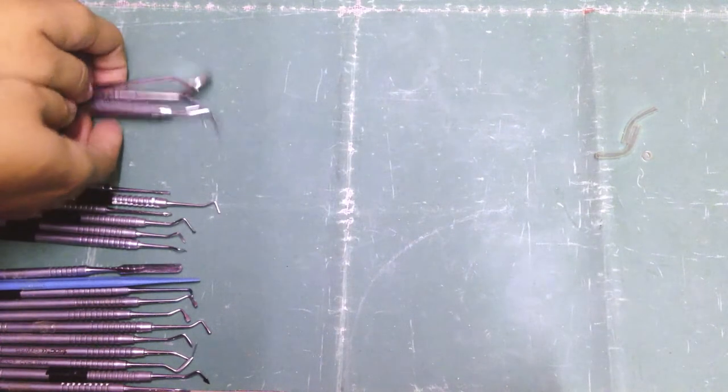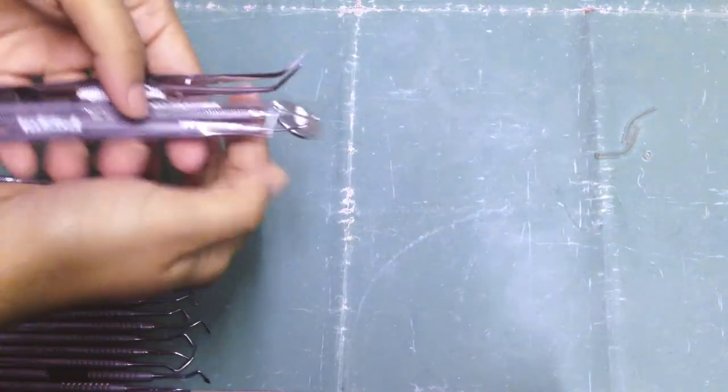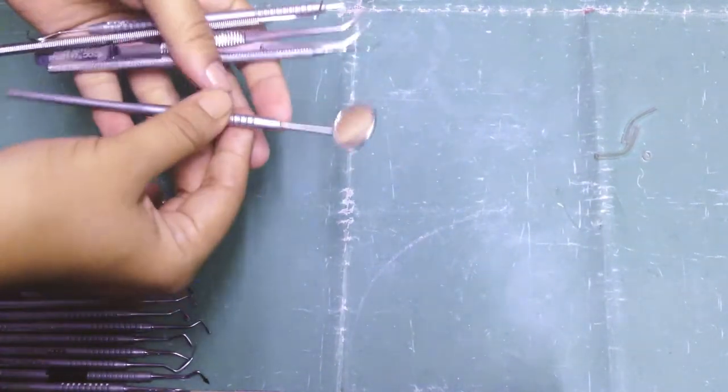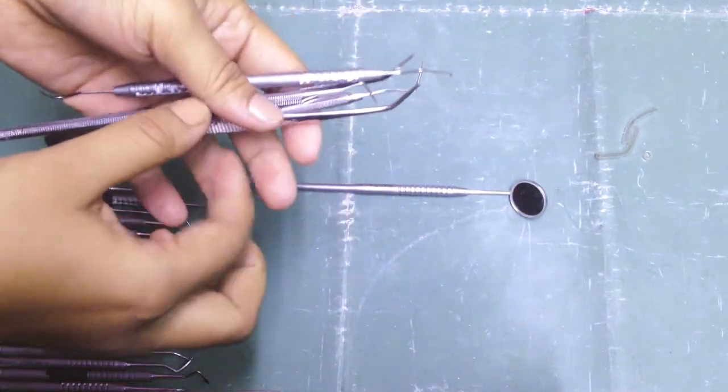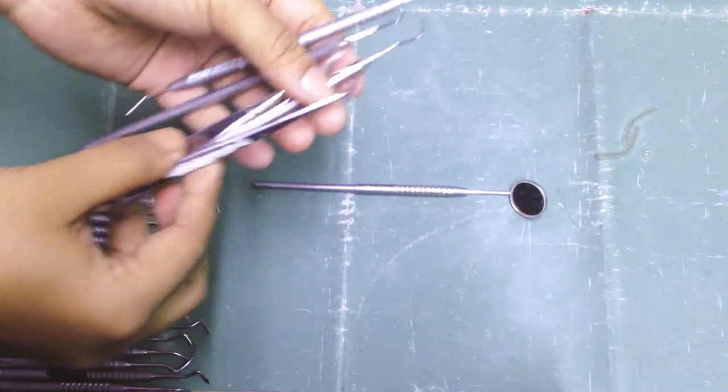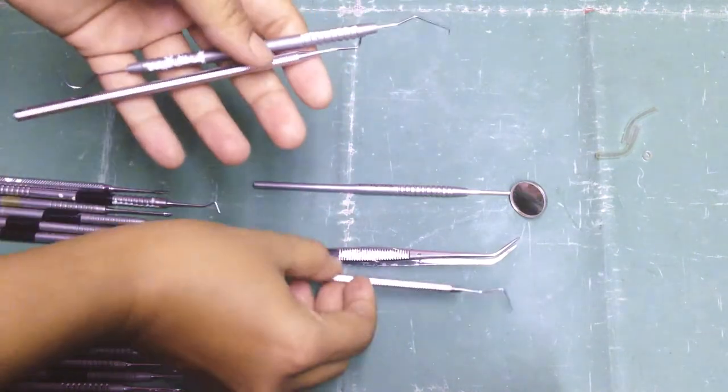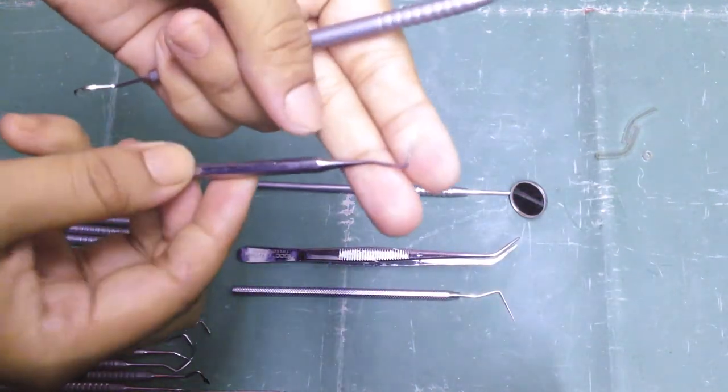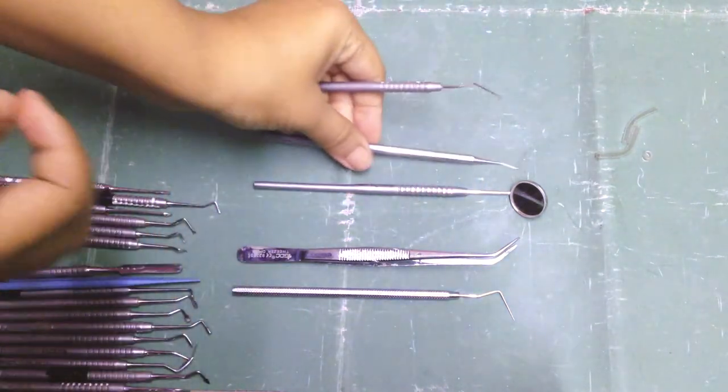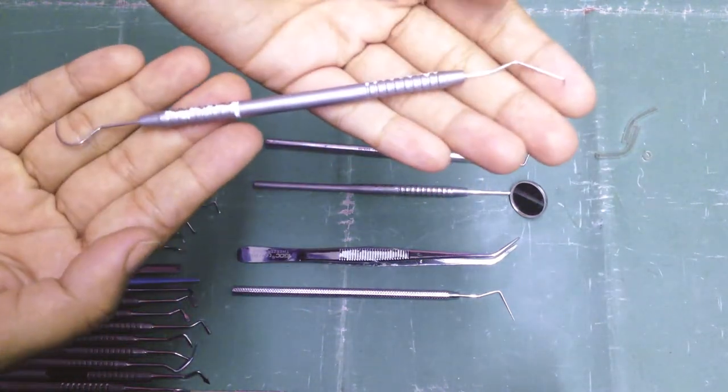Let's start with our diagnostic instruments. Here I have diagnostic instruments, and this is a mouth mirror. Then we have some explorers or probes, and this is a straight explorer, a straight probe. Then some explorers.